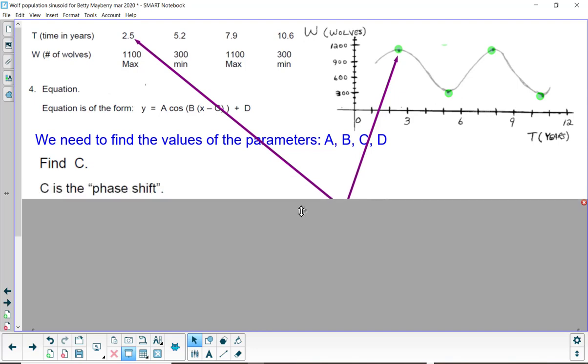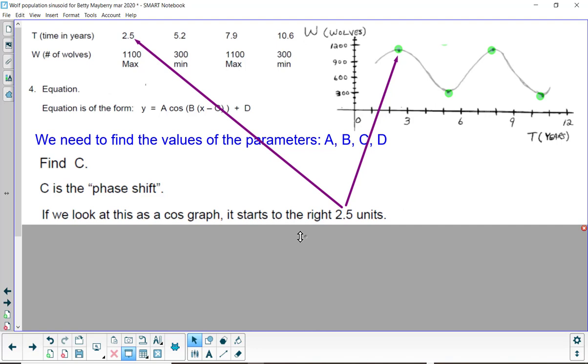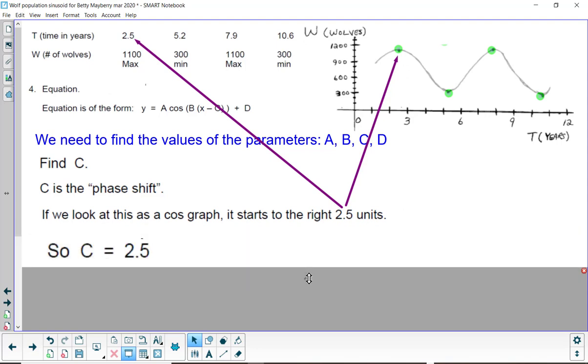C is called the phase shift. And if we look at this as a cosine graph, it is starting 2.5 units to the right. So, that means that C is going to be a positive 2.5 and it's going to be minus that 2.5.